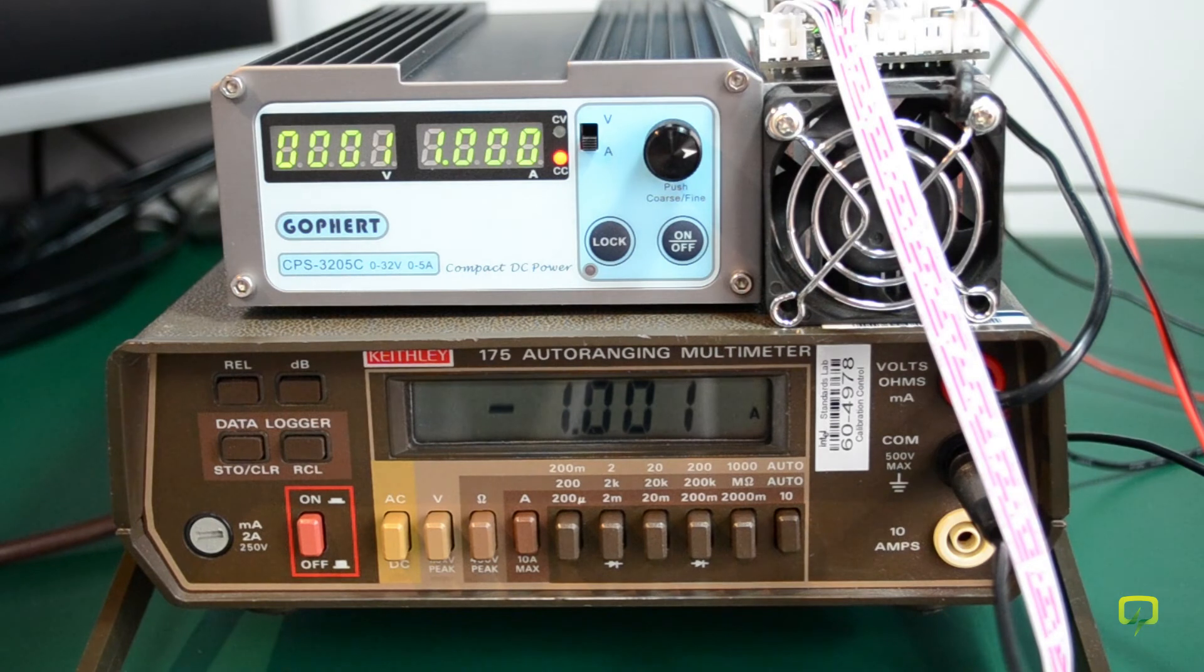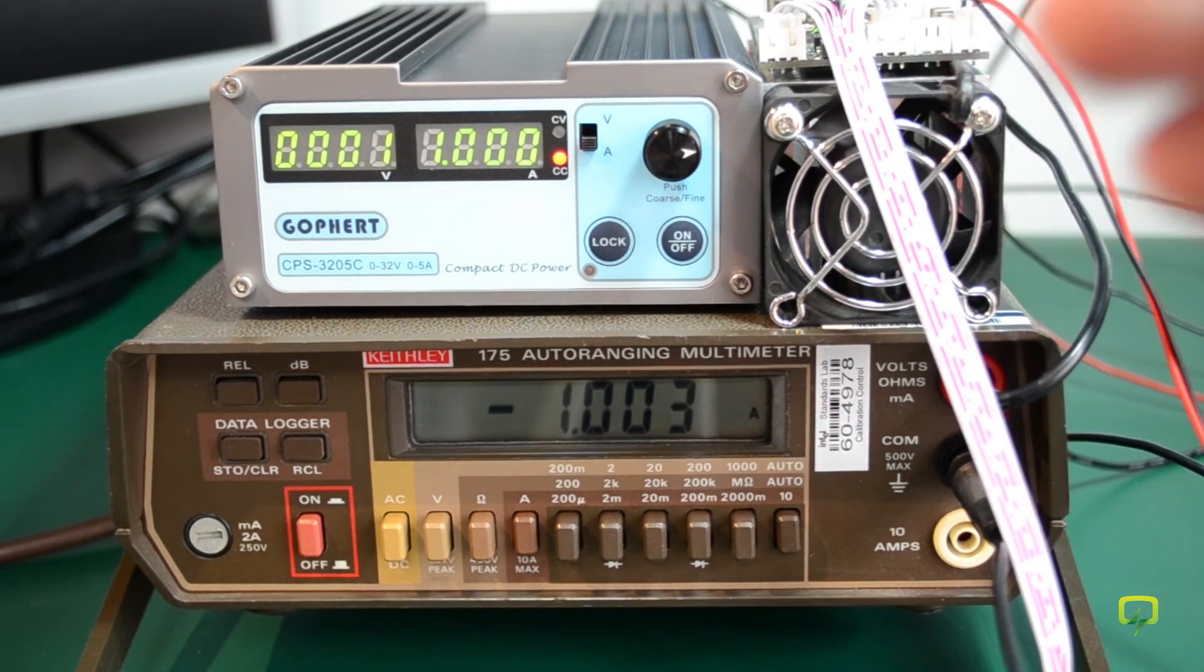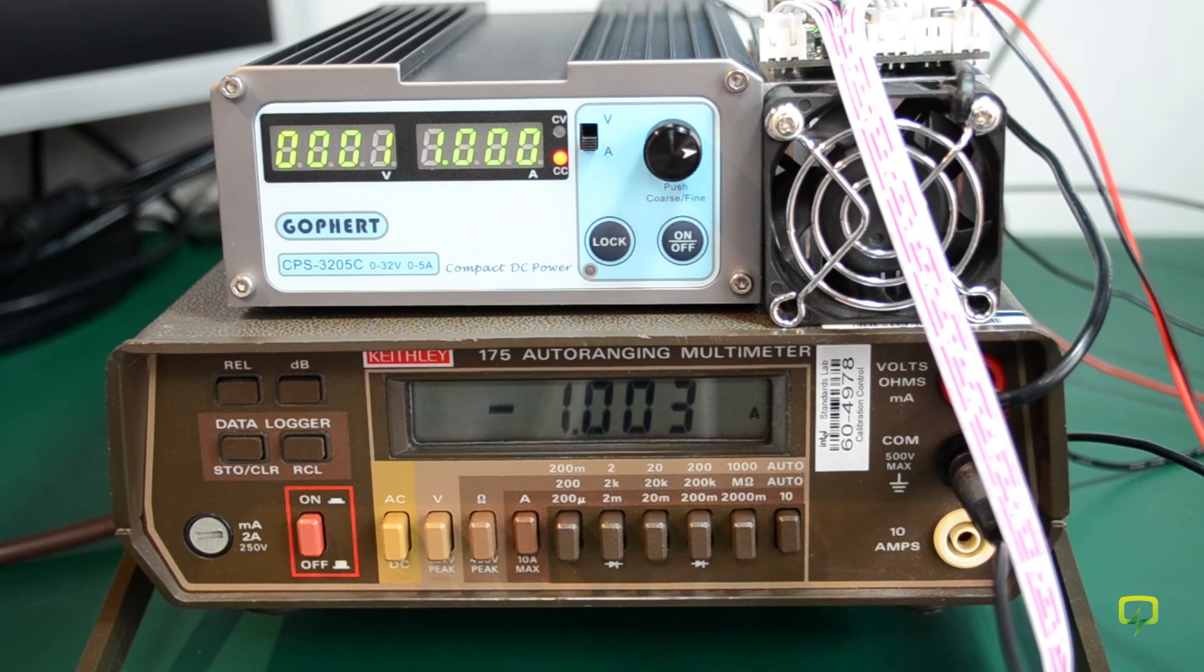It seems that every time I adjust the output current calibration to be 1.00 amps, it slowly drifts, and I'm not sure if that's due to the power supply or due to my adjustable dummy load. But it's something I have to live with because of the limitation of the equipment I'm using.